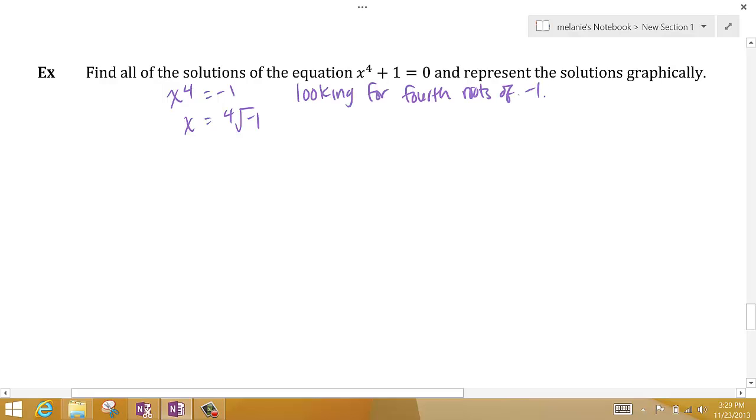So let's write negative 1 as a complex number. That's z equals negative 1 plus 0i. Let's find the modulus and the argument.